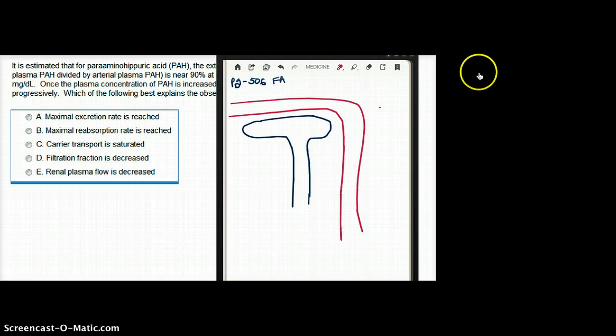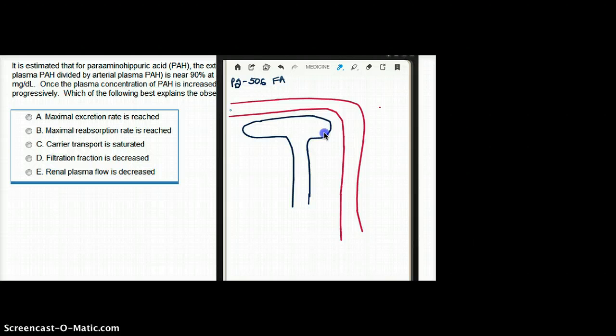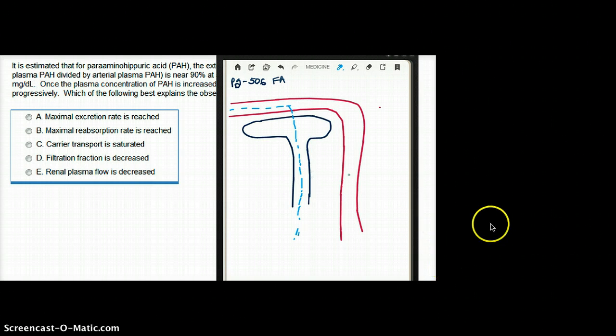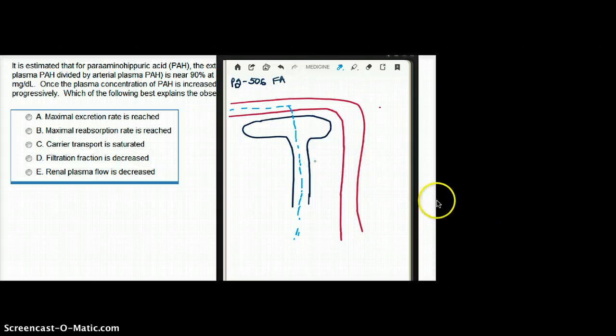Imagine that this is the glomerulus, and the blood vessel is passing like so. And inside the blood vessel, we have plasma. Now what happens with PAH is some of it is filtered. So this is being filtered, which becomes part of the urine. None of the filtered PAH is reabsorbed in the kidney, right?